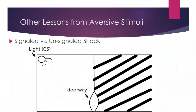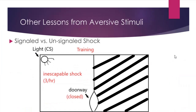We can study the effects of signaled versus unsignaled shock. The way it works is you have a shuttle box where one half is gray and there's a light signal that serves as a CS. The other side is black and white striped — you want it to be visually distinct from the other side. During training, the door is closed and you give inescapable shock in both sides of the shuttle box, about three shocks per hour. On one side, the light comes on just before the shock is delivered — that's the signaled shock.